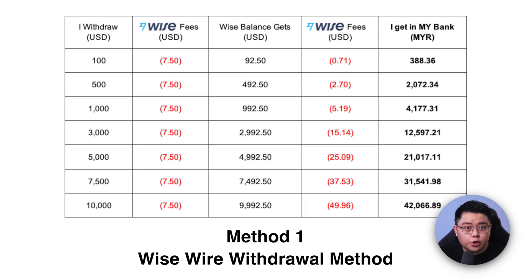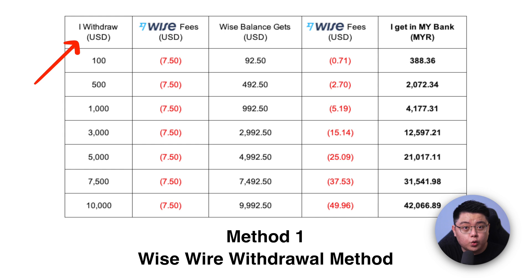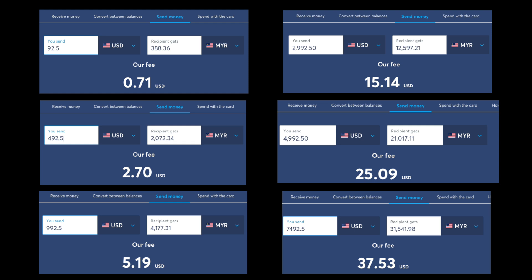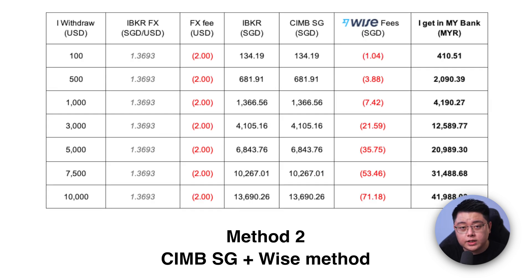This section is mainly for my Malaysian audience. I'll compare this withdrawal cost against the CIMB Singapore plus Wise method. The first table shows the process of withdrawing USD from Interactive Brokers into a Malaysian ringgit bank account. For whatever amount you withdraw from IBKR, there's a fixed fee of $7.50 charged by Wise, which determines the amount landing in your Wise USD balance. To withdraw that money to a Malaysian bank account, you pay a variable fee in USD, then receive the equivalent in Malaysian ringgit.